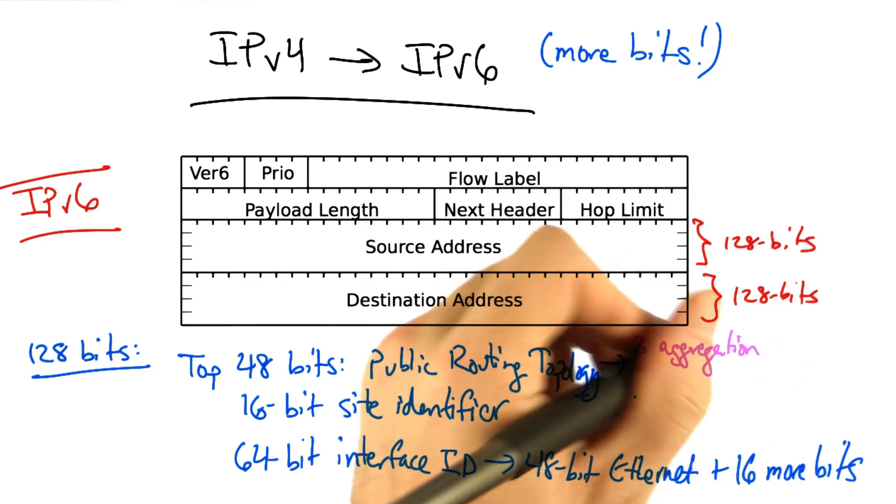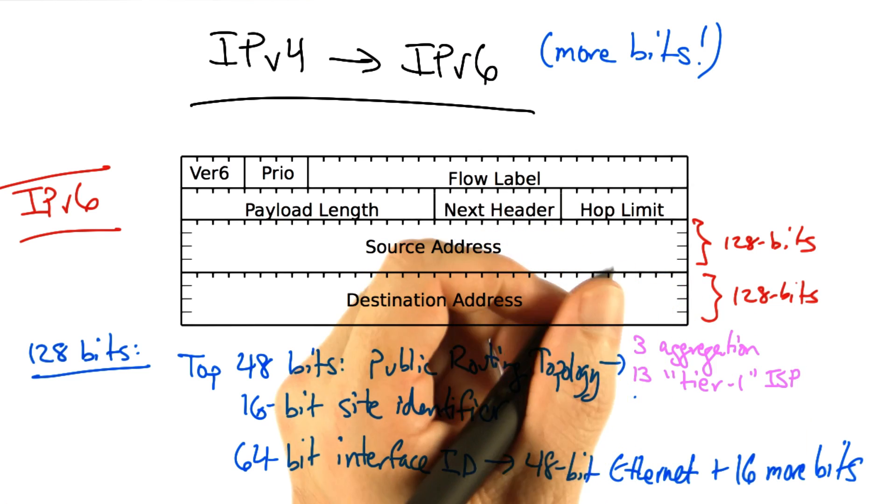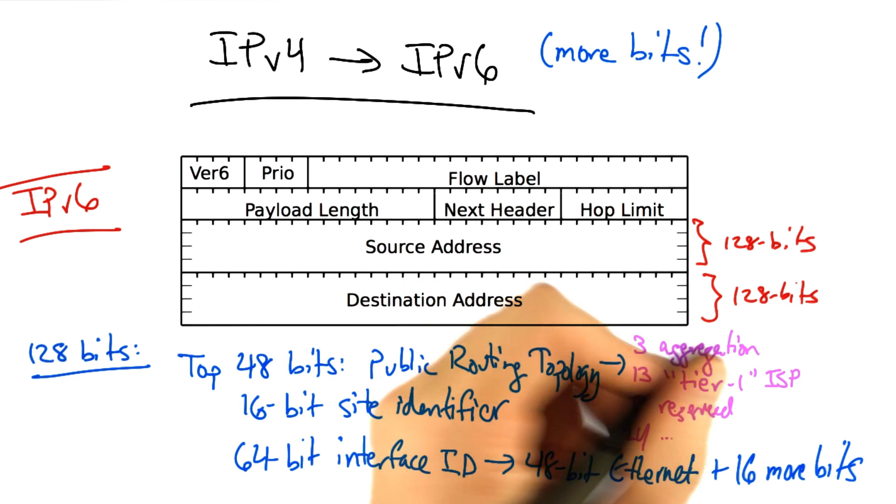They include 3 bits for aggregation, 13 bits for a top-level provider, something like a tier 1 ISP, 8 reserved bits, and 24 additional bits.